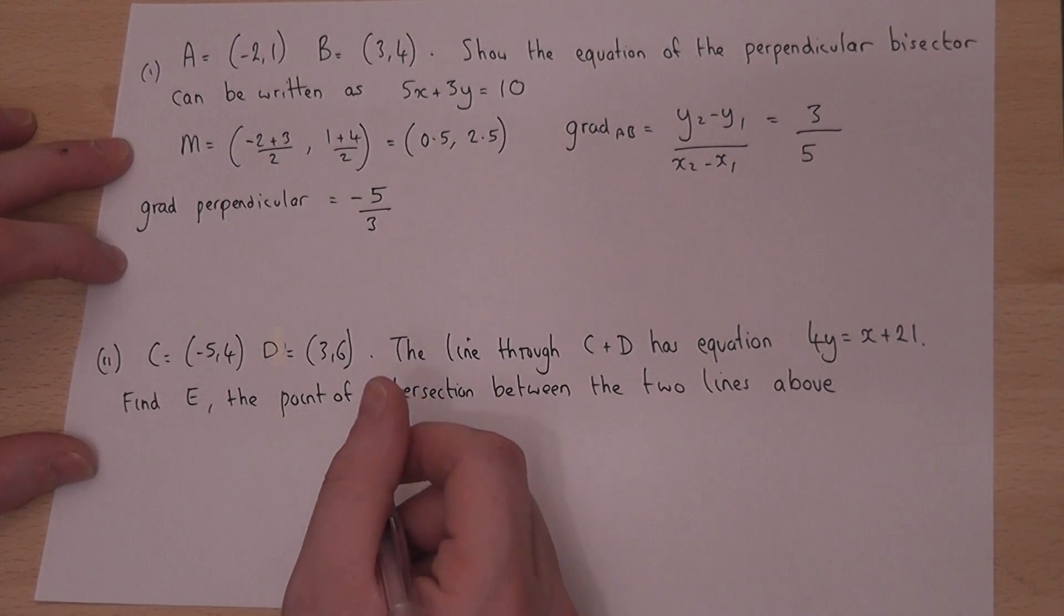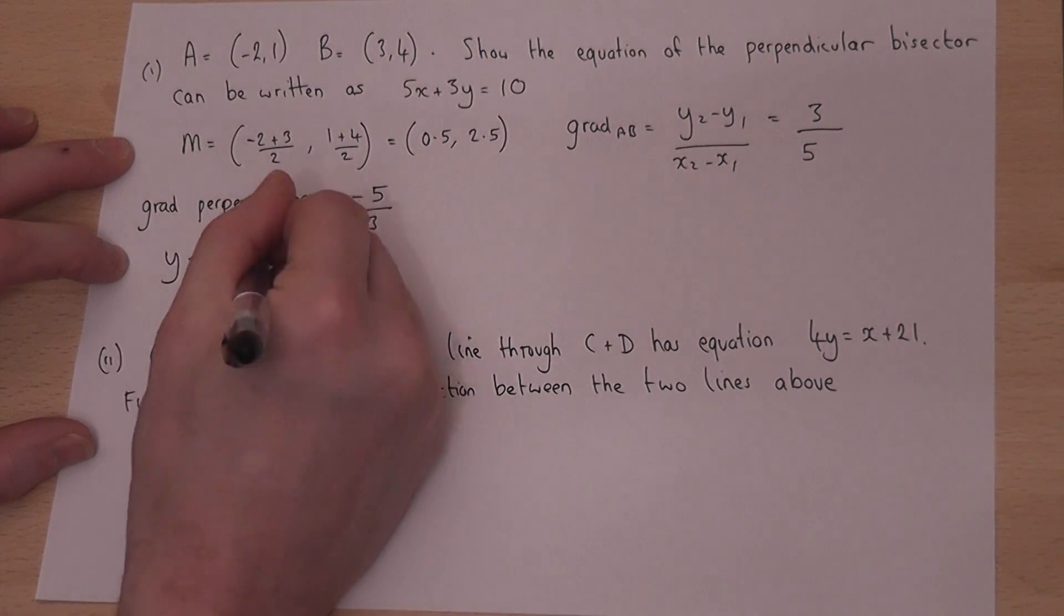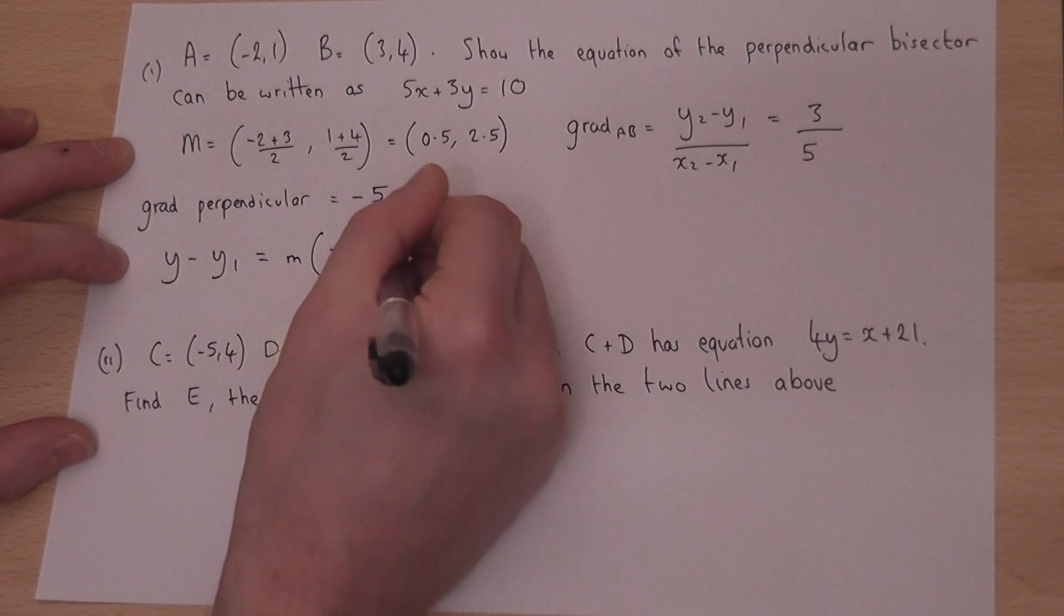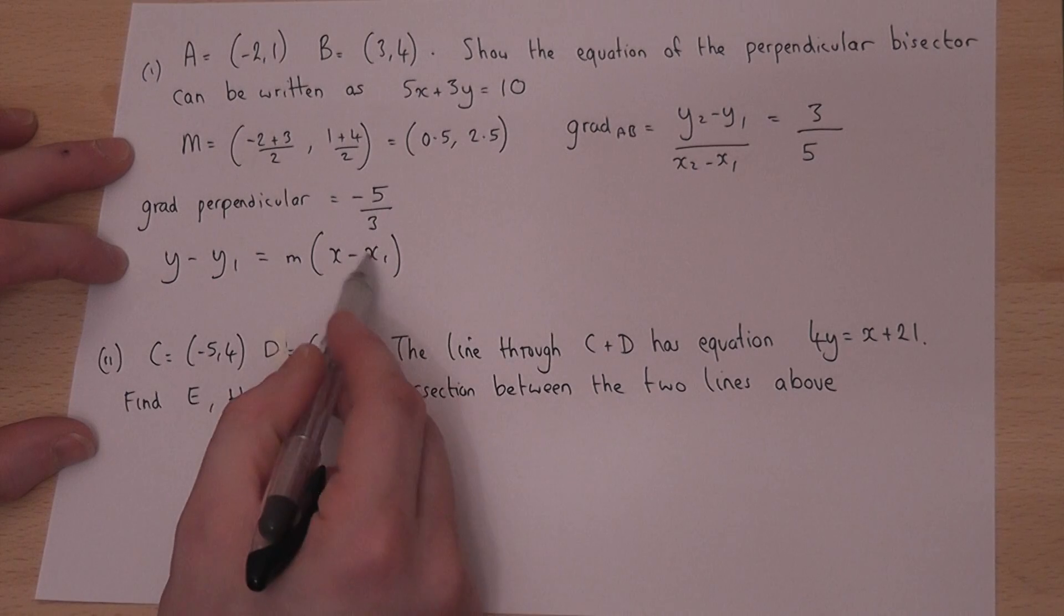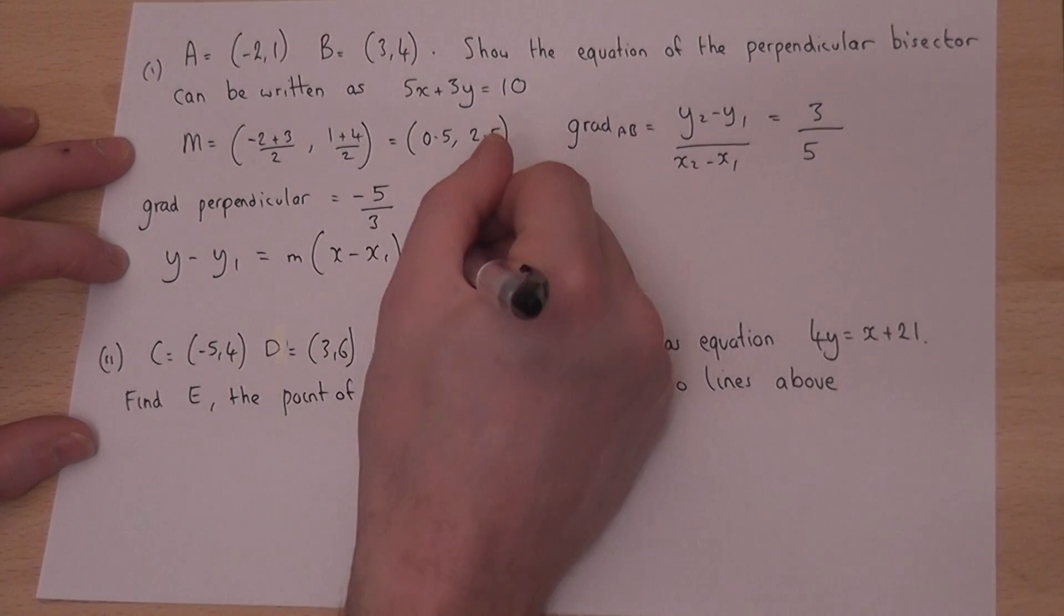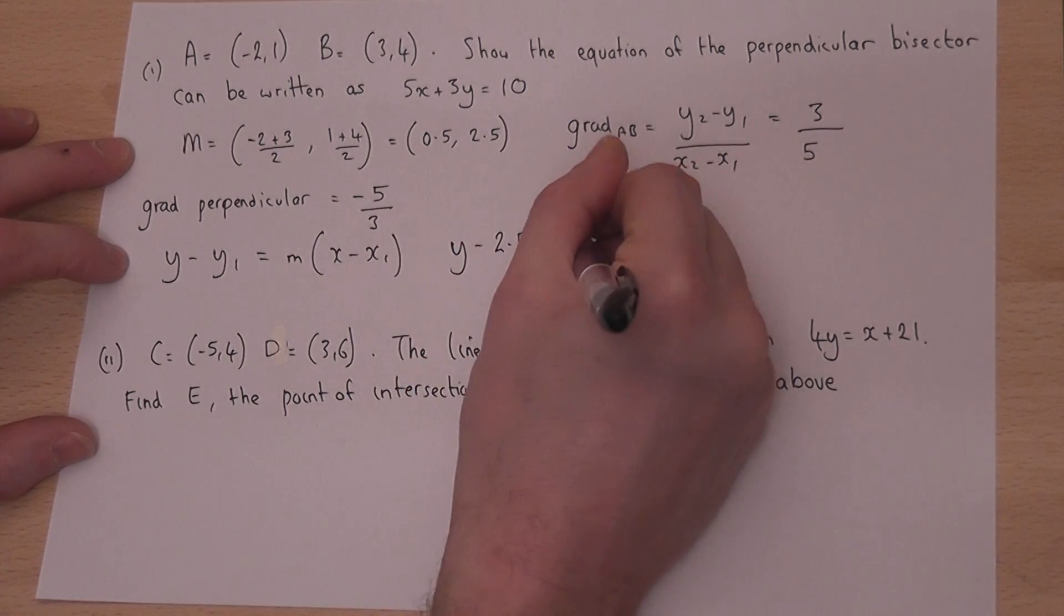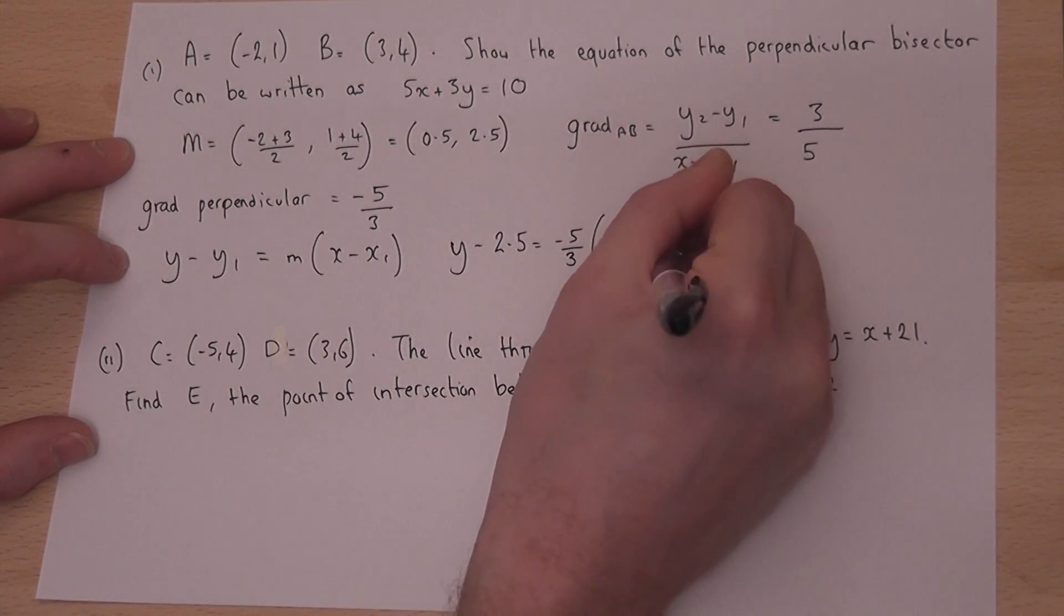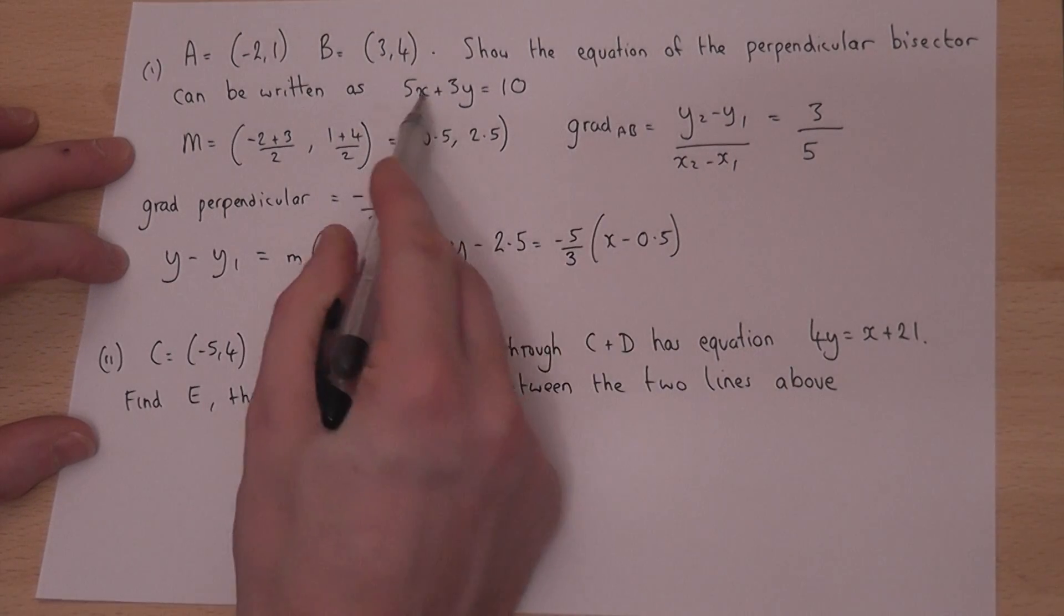And then to find the equation of the line, we use y minus y1 equals the gradient x minus x1. Now, the gradient we've worked out was minus 5 over 3, and the coordinate is given here. So y minus y1 equals m x minus x1. So the challenge here is to show that this rearranges to give that.